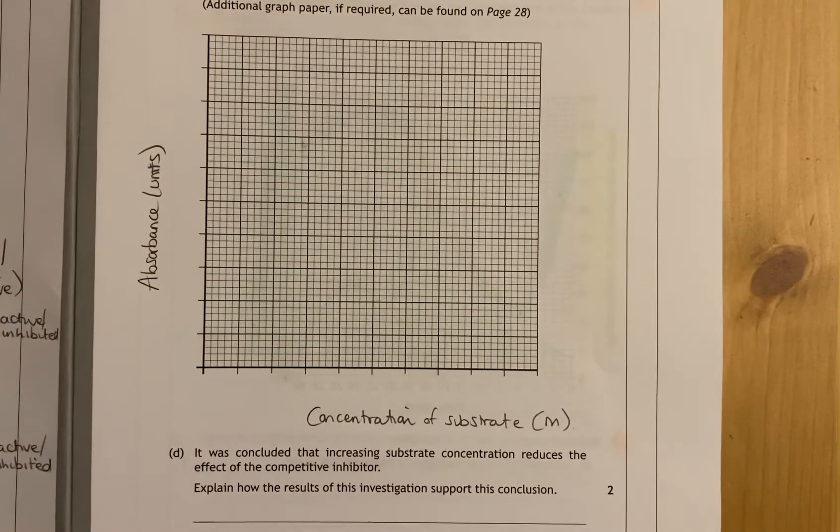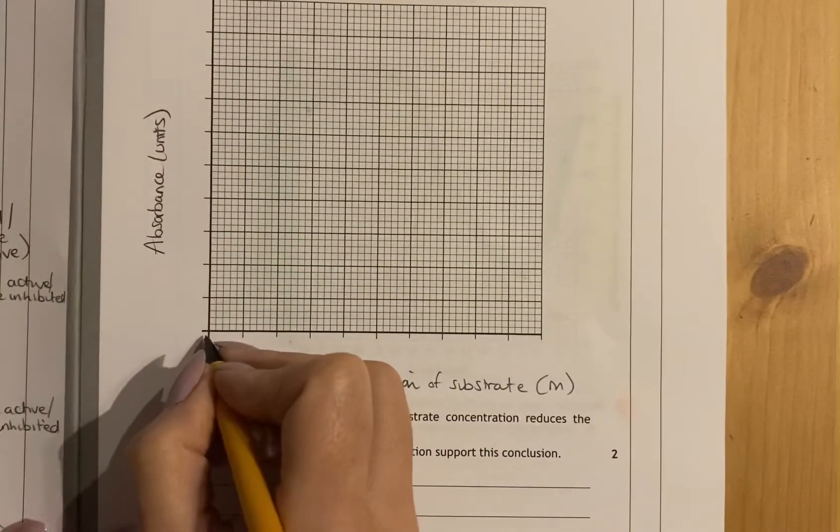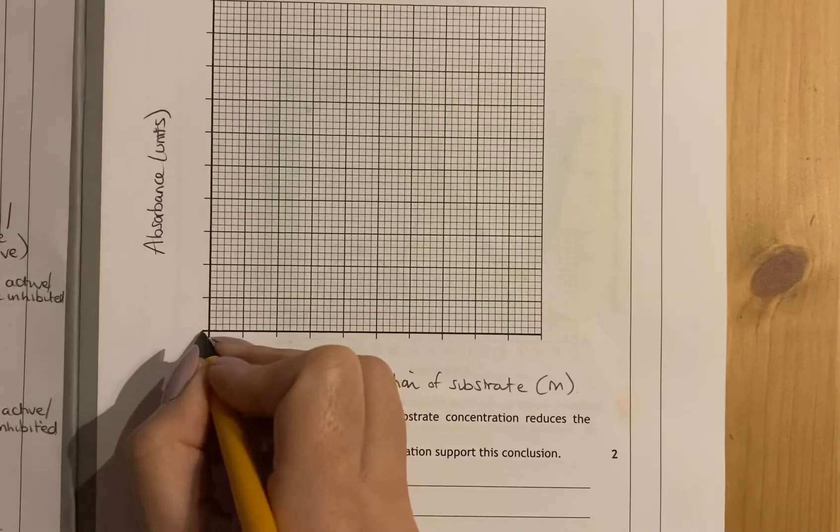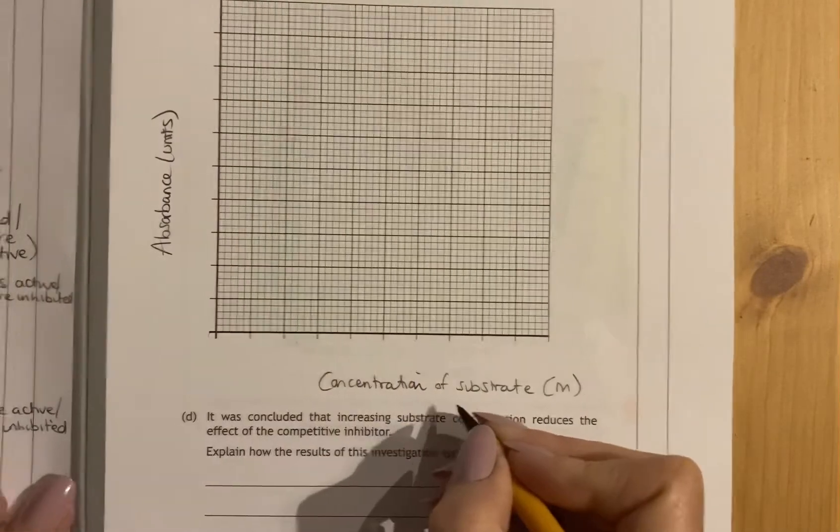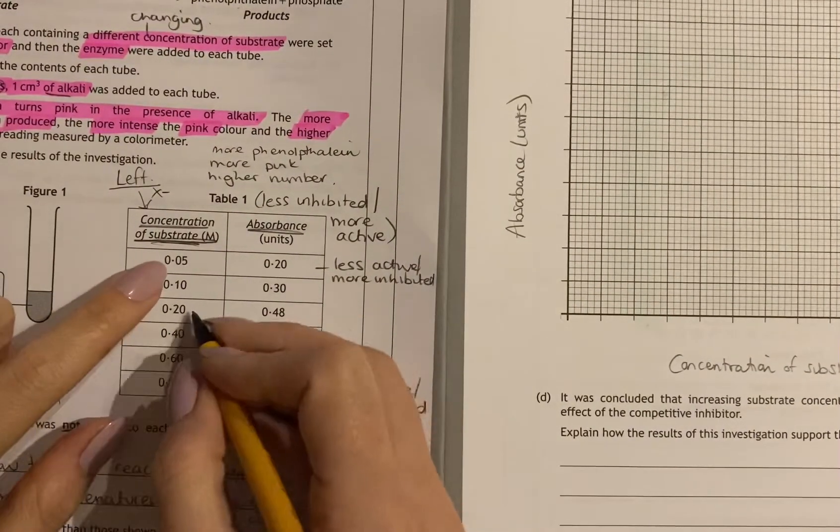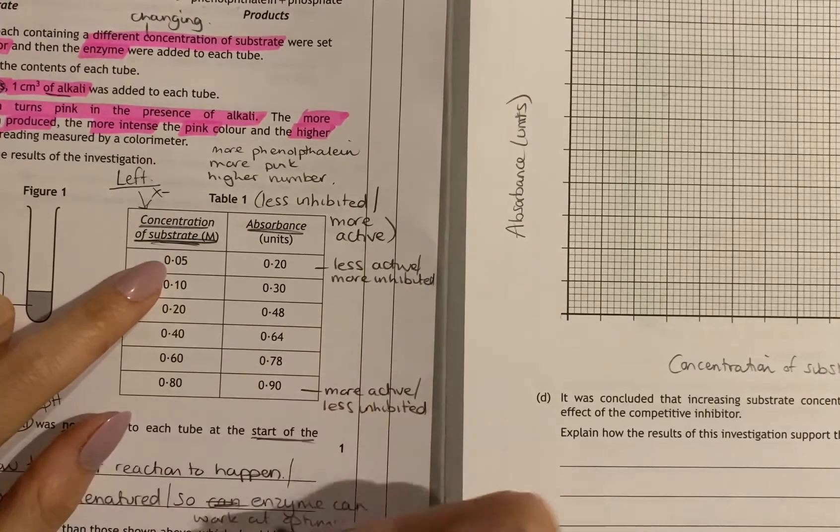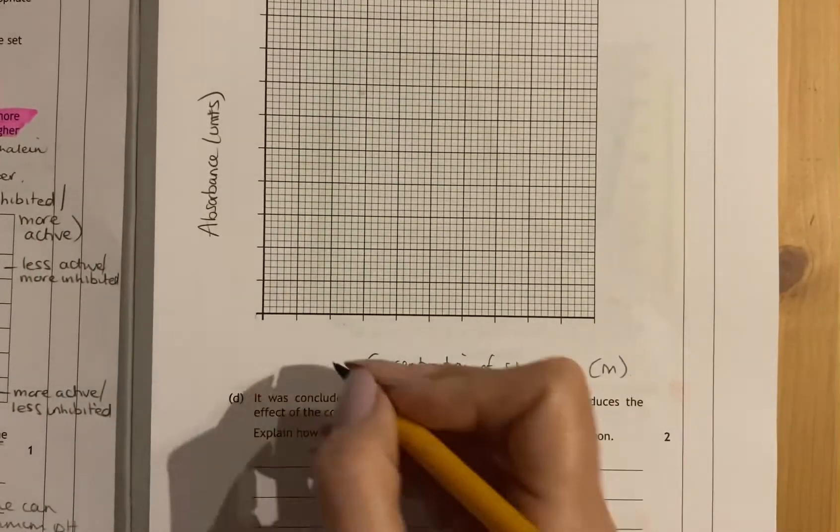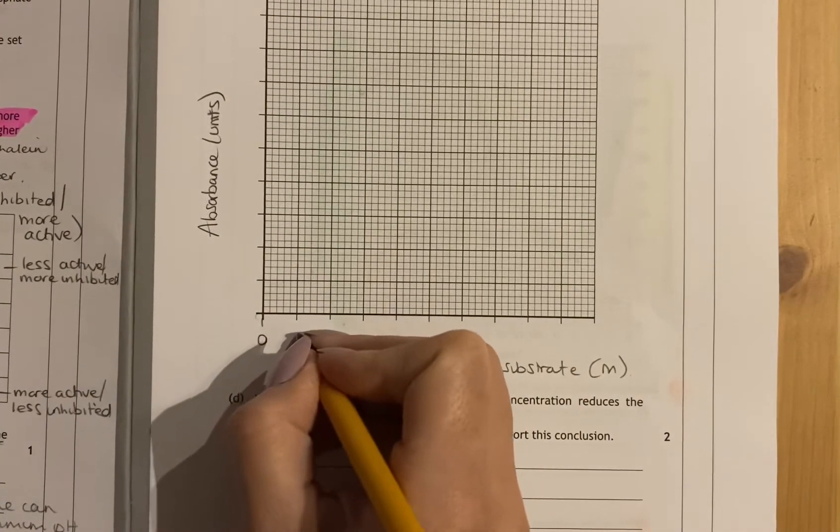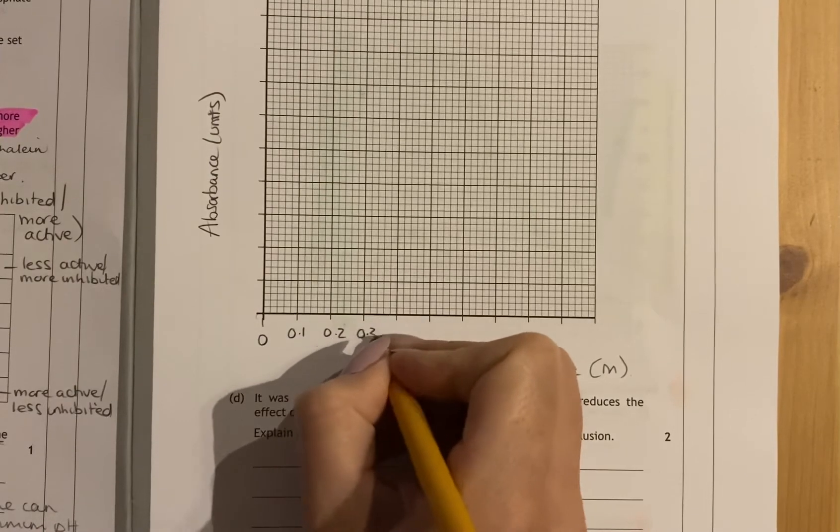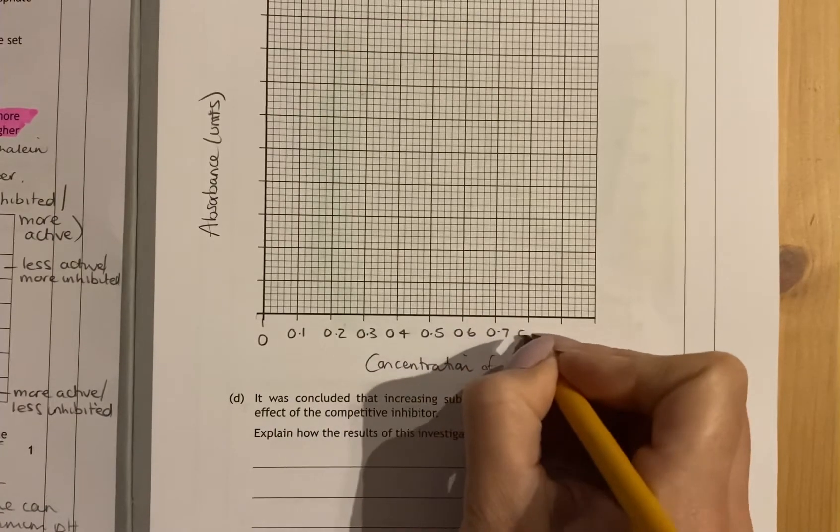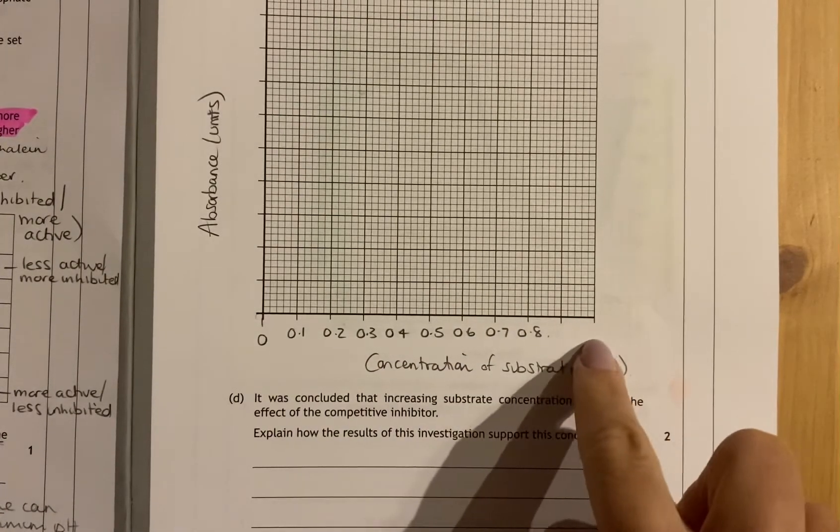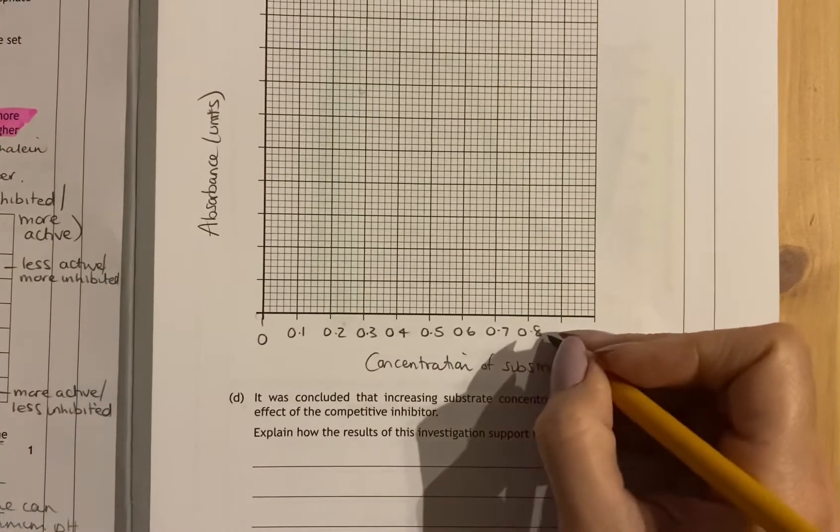Do not shorten concentration to CONC or substrate to SUB. You must include units which is M for molar. The next label is absorbance units, so absorbance and then your units are just units up the side. So far you've still not even gained one mark. You have to do units and labels and then you have to do your scales. You can have a common zero if it's appropriate, but it's safer to have two separate zeros. If we're doing concentration of substrate, we're starting at 0.05 and going up to 0.8. So you could go up in 0.1's.